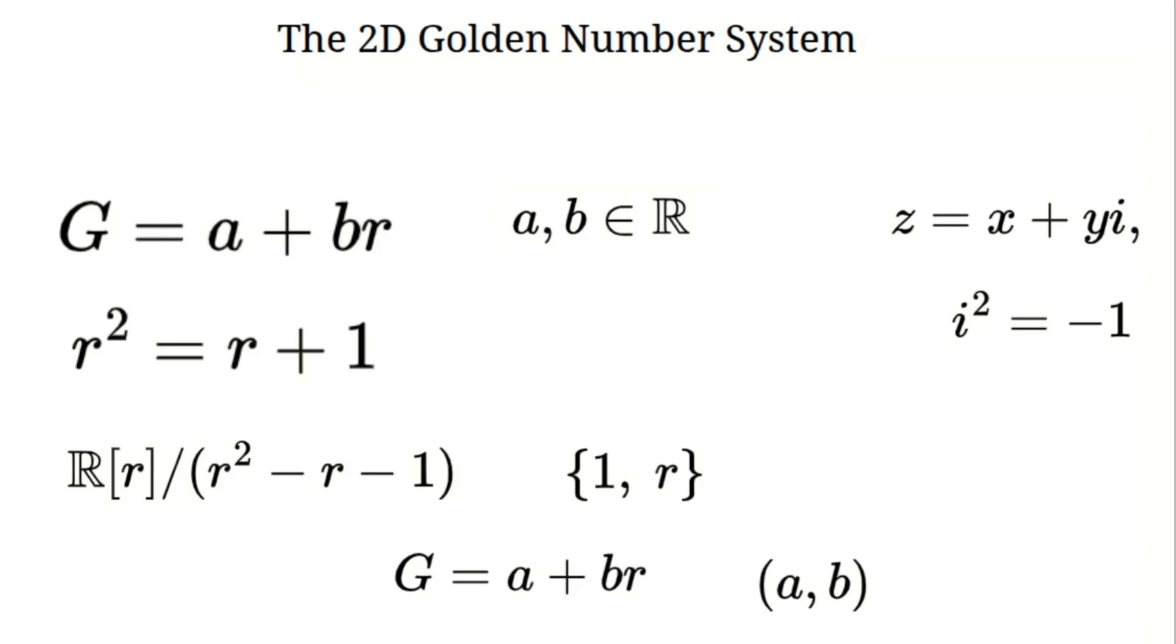First, let's see what R does when multiplied by itself. Powers of R. With R squared equals R plus 1, let's calculate the powers of R. Start with R to the 0. That's 1, which is 1 plus 0R. R to the 1st is just R, or 0 plus 1R.